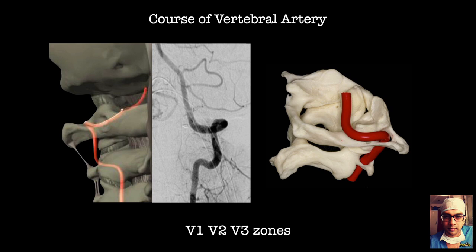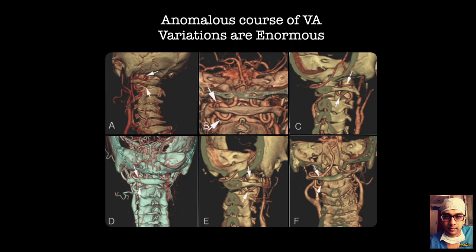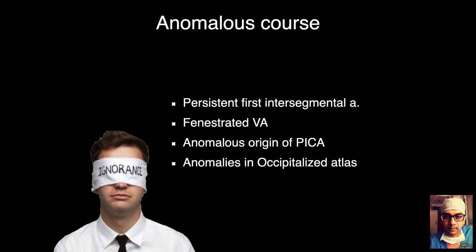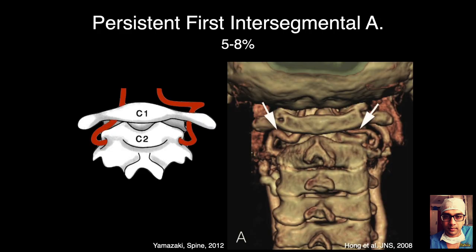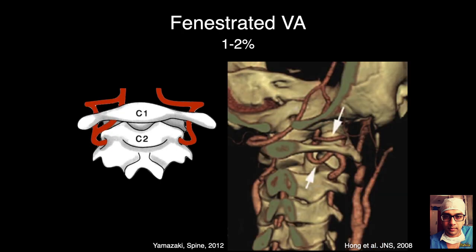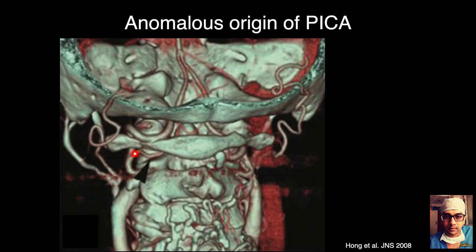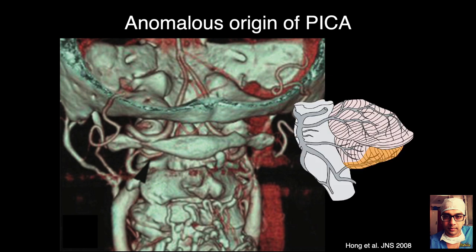Understanding the course of the vertebral artery is important. The V1 segment can have anomalies such as high-riding vertebral artery; the V2 and V3 segments can also have anomalies. If not recognized pre-operatively on CT angiogram, you can get into serious trouble. Examples include a persistent first intersegmental artery going underneath the arch of C1, a fenestrated vertebral artery going both below and above the C1 arch, and an anomalous origin of the PICA — injuring the artery here can cause cerebellar infarct or PICA syndrome.